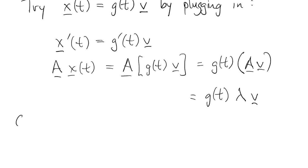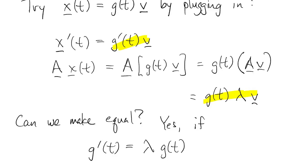Now we have these two things. Can we make these two things equal to each other? And the answer is clearly yes if g is chosen in such a way that g prime equals lambda g. And we know all about that, right, that just has exponential solutions e to the lambda t.